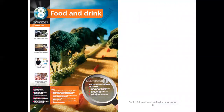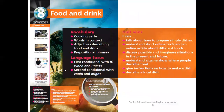Please open your student's book at page 86, Unit 8: Food and Drink. The main topics of our unit: vocabulary includes cooking verbs, words in context, adjectives describing food and drink, and prepositional phrases. For grammar, language focus covers the first conditional with 'if', 'when', and 'unless', and the second conditional with 'could' and 'might'.